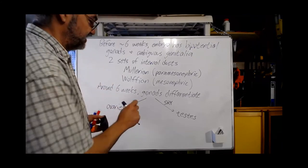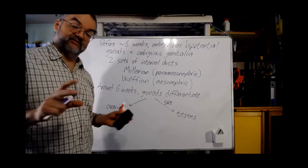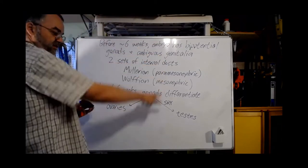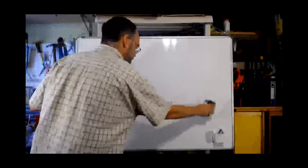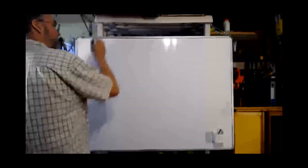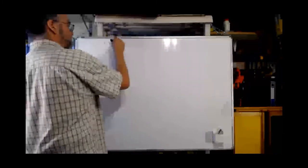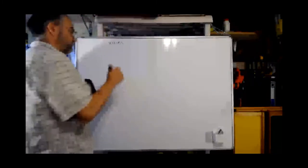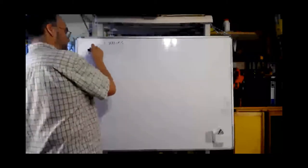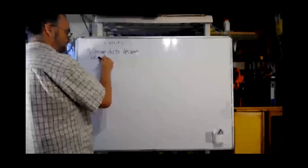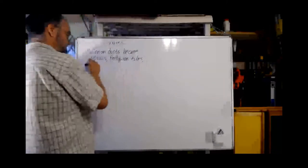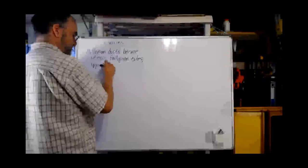After that, the products of the gonads are going to affect the development of everything else. If you have ovaries, the default pattern is that the Mullerian ducts become the uterus, the fallopian tubes, and the upper third of the vagina.